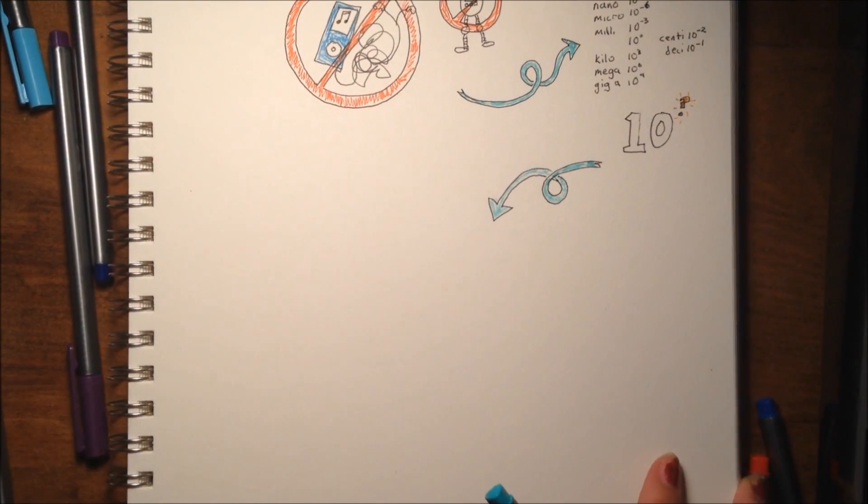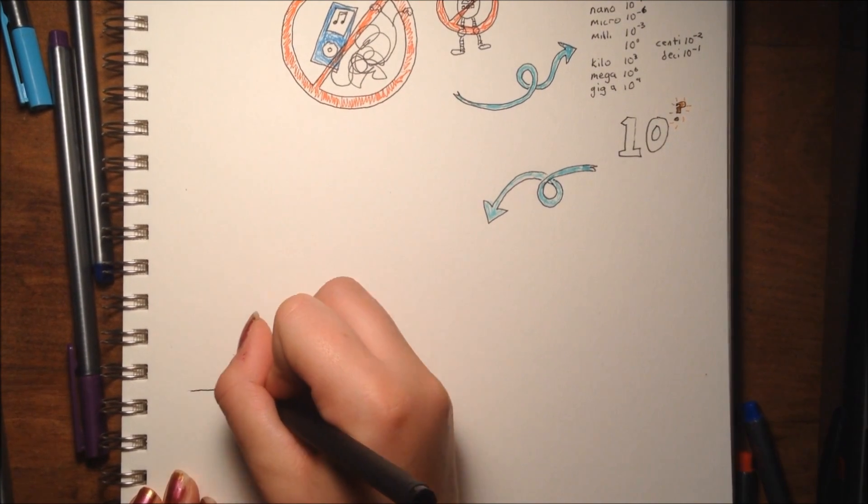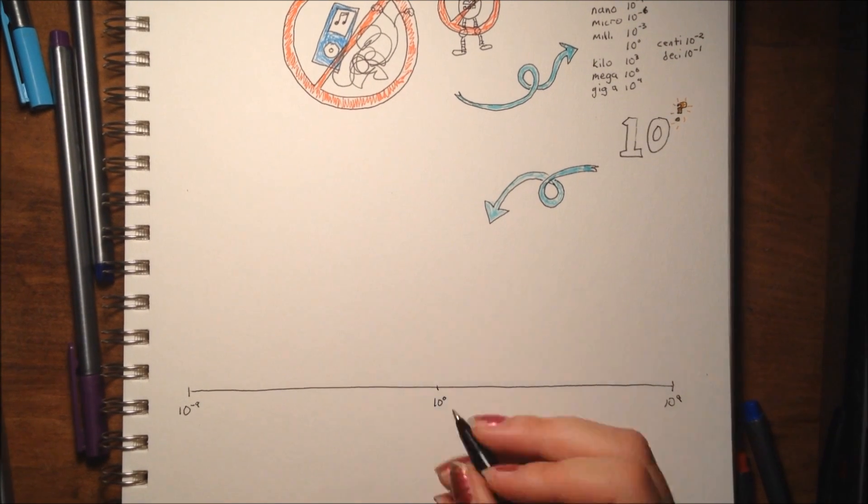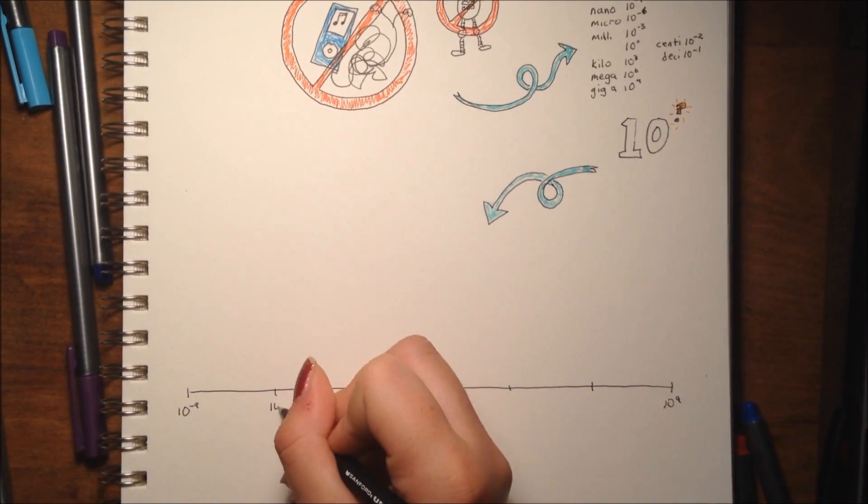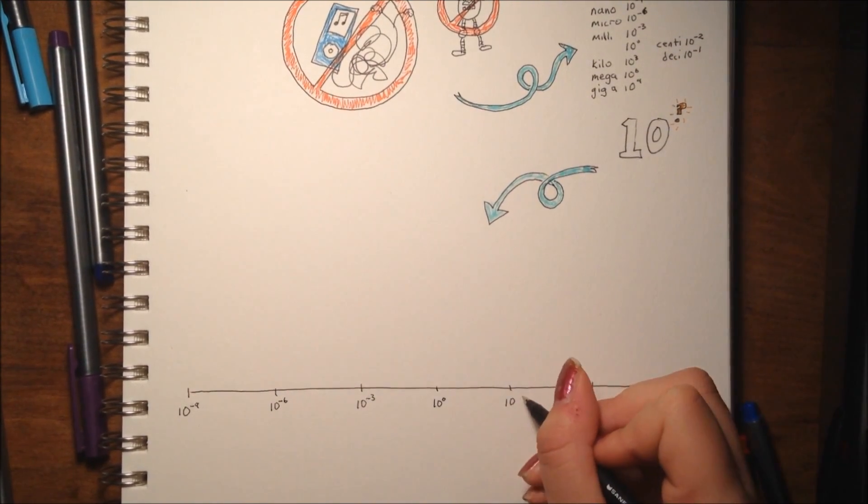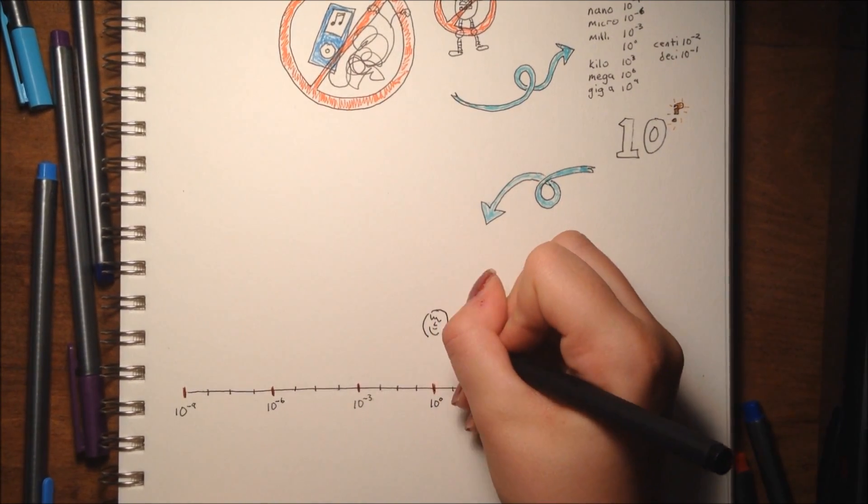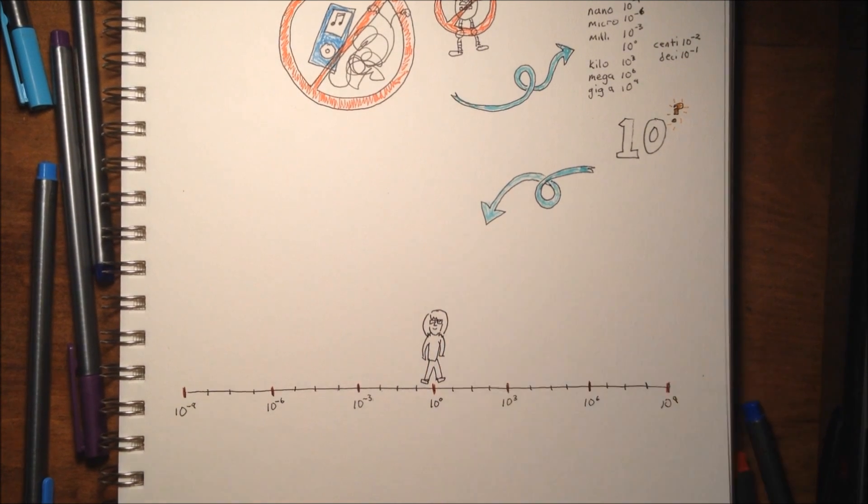In order to get an idea of how small nano really is, we're going to draw a number line from nano to giga, or from one billionth of a meter to one billion meters. We're going to start in the middle, which by no coincidence is human-sized. Next we'll start going up.